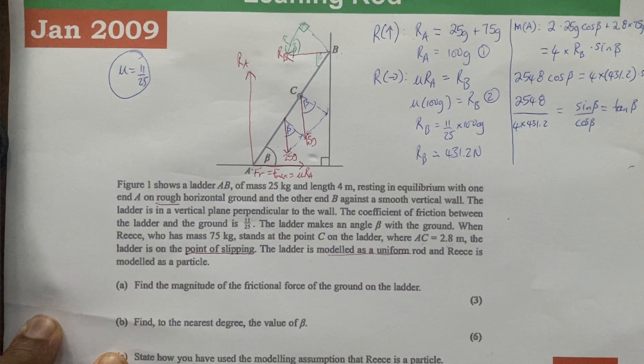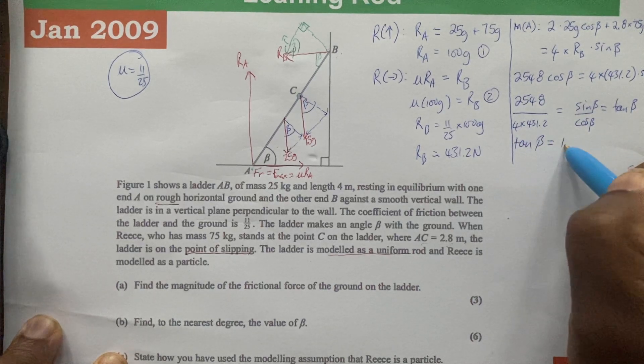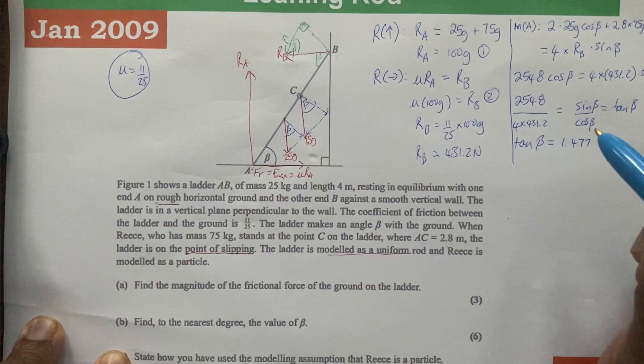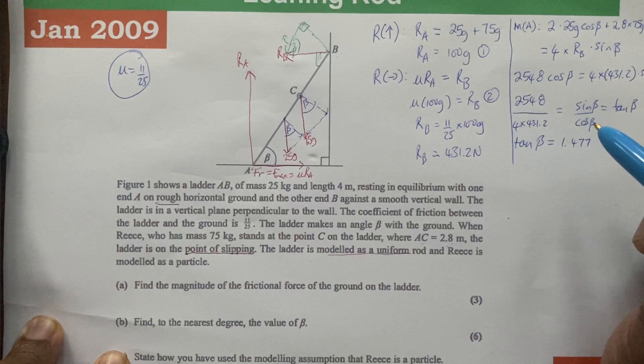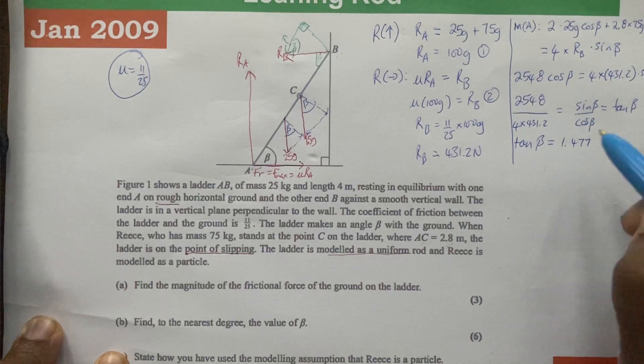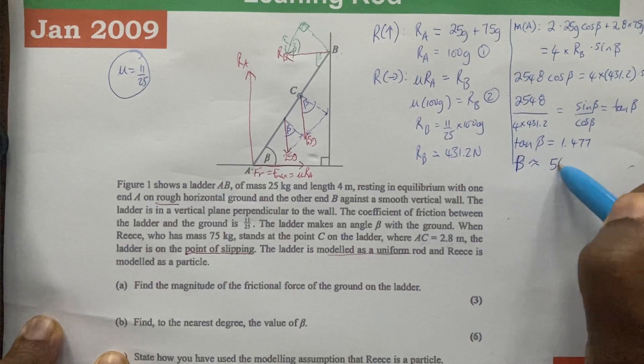If we simplify that, we're going to have tan beta equals 1.477 to three decimal places. We would want to keep the calculated values as long as possible and then round at the very end. If we do shift inverse tan of 1.477, then we're going to get beta to be approximately equal to 56 degrees to the nearest degree.